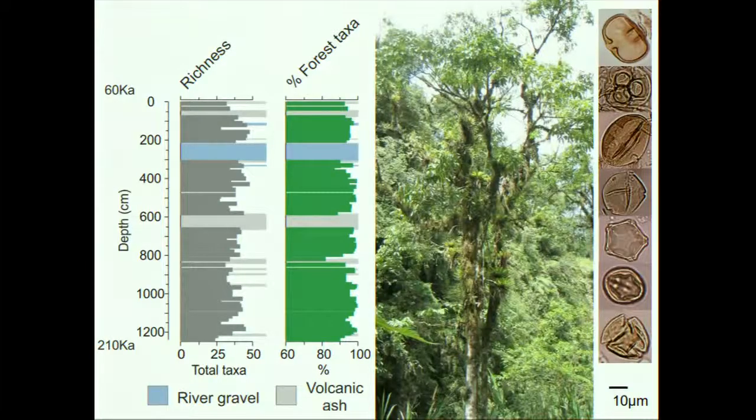In order to do this, I'm using palynology. Palynology is the study of pollen grains — the microscopic biological remains which are produced by plants in varying abundances. They preserve in the sediments and have a unique structure which allows us to look at what the vegetation used to be like. Some examples of these can be seen on the right-hand side of the screen.